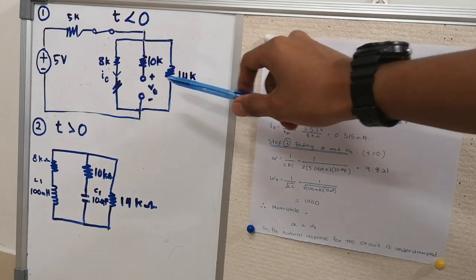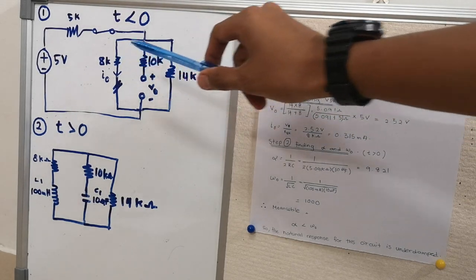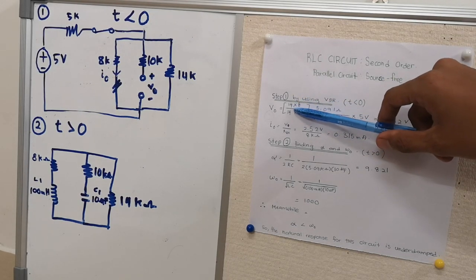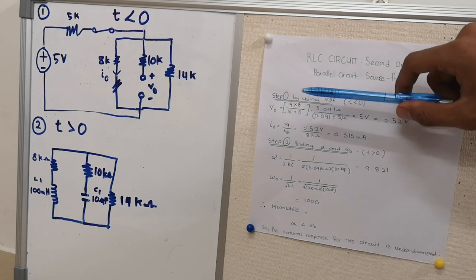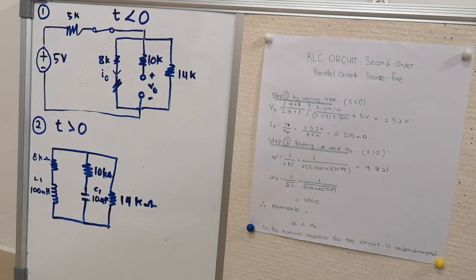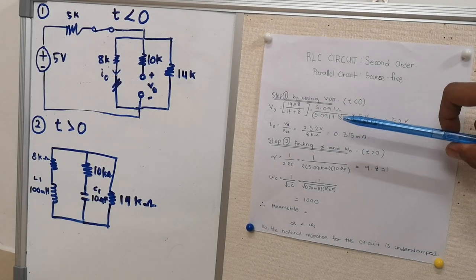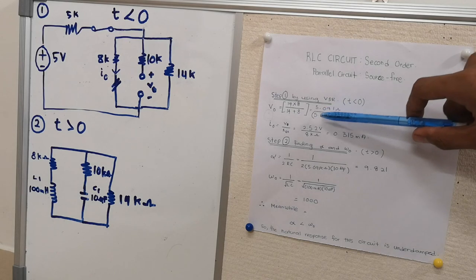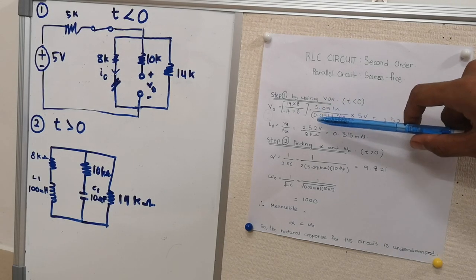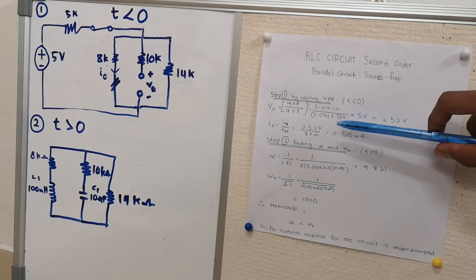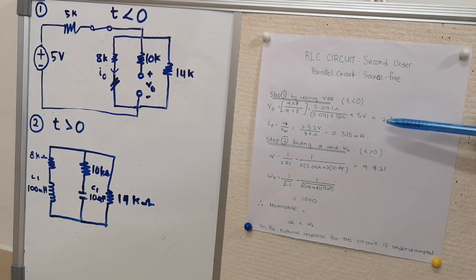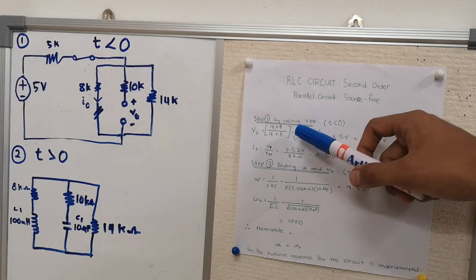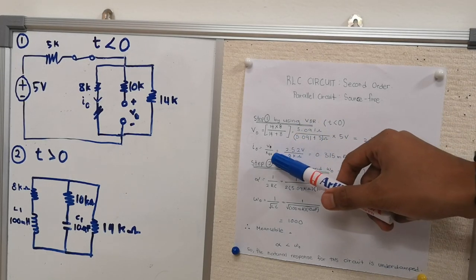Resistance 40K ohms in parallel with 8K ohms: 40K times 8K divided by 40K plus 8K gives us R parallel. Using the voltage divider rule, 5.091 ohms divided by 5.091 plus 5 ohms, multiplied by 5 volts, gives 2.52 volts. From this we get I node equal to 0.315 milliamps.